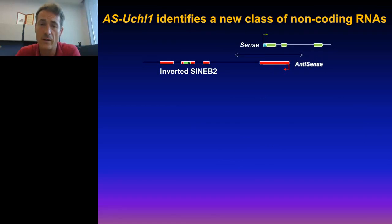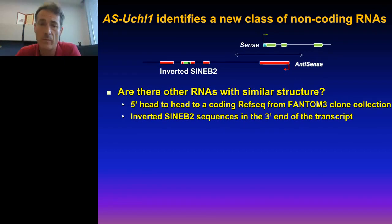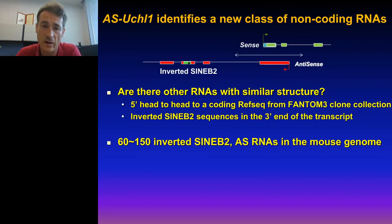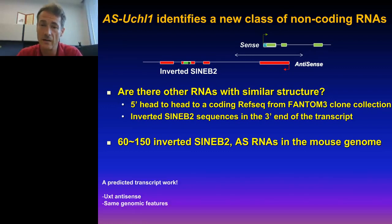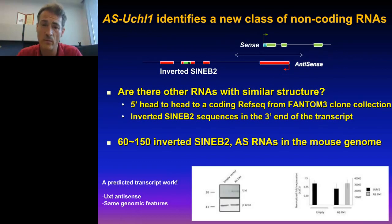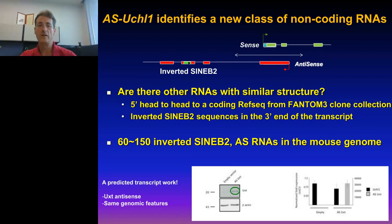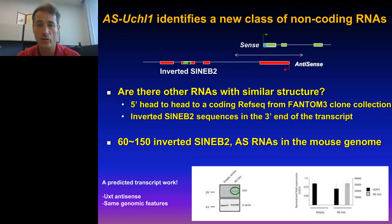We next asked if there are other such elements in the genome, or if this is a single event. We bioinformatically analyzed all antisense pairs in the FANTOM project and found other candidates — particularly between 60 and 150 candidates — having one antisense to a protein-coding gene where that antisense contains a SINEB2 element in the same orientation. We picked one of them, the antisense of UXT, and overexpressed it. We saw no effect on the RNA level but a visible effect on protein translation, suggesting that not only the UCHL1 antisense but also the UXT antisense and probably many others are important to positively regulate protein translation.